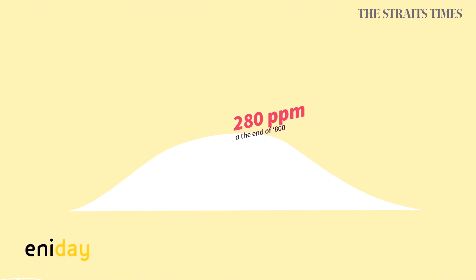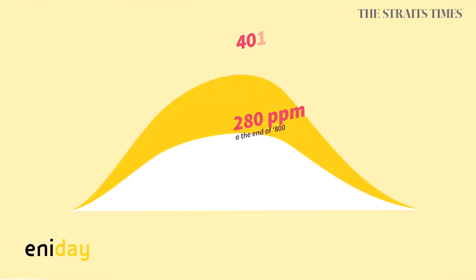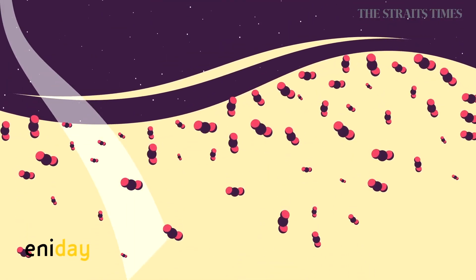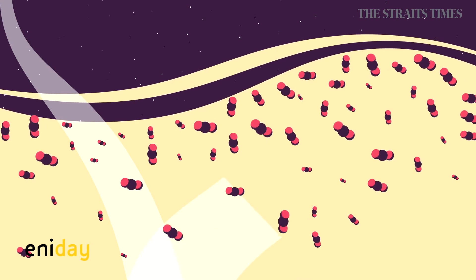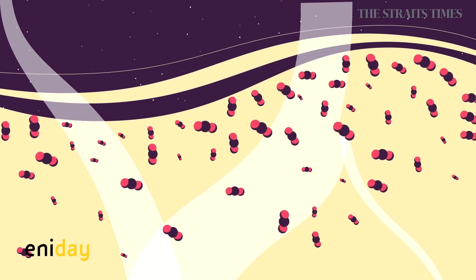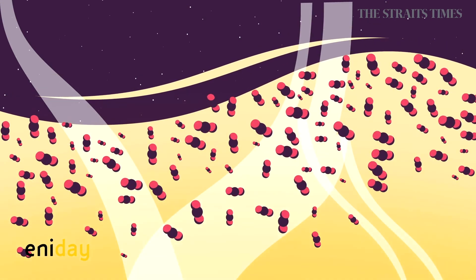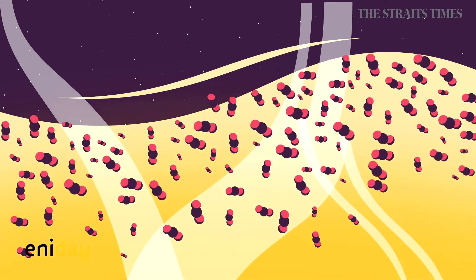CO2 concentration increased from 280 parts per million at the end of the 1800s, up to 400 parts per million today. If, in the past, CO2 retained the heat that we needed to feel comfortable on Earth, now its effect has almost doubled, and we risk getting very hot in the near future.